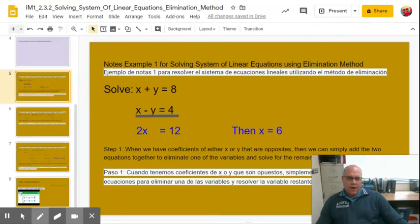All right, we're going to learn our third method for solving systems of linear equations today. This method is called the elimination method. And so here's our system. We have x plus y equals 8 and x minus y equals 4.